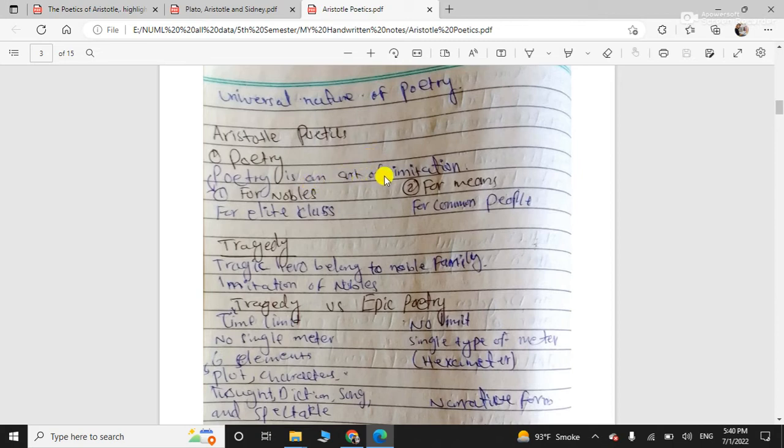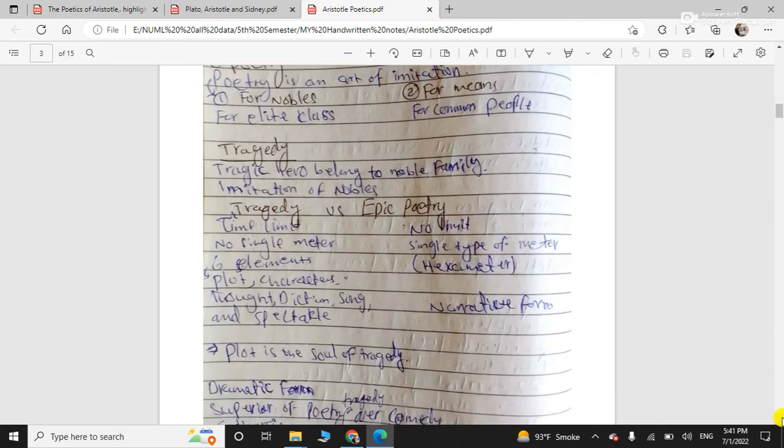Poetry is an art of imitation, imitation of characters, of their actions. And tragedy, so the important concept is tragedy. How he defined tragedy, we will discuss in detail. So he also differentiated between tragedy and epic poetry. He said that tragedy, it has a specific timeline, whereas epic has no limit. Tragedy is shorter, whereas epic is a long narrative.